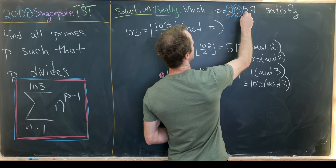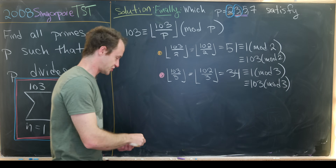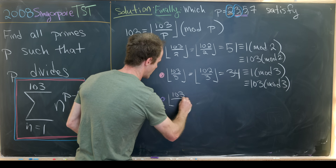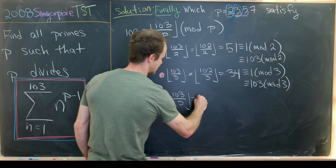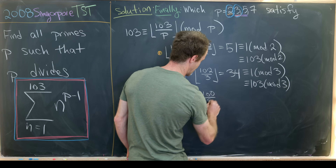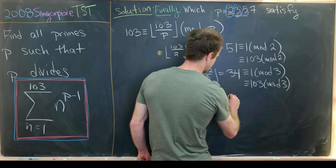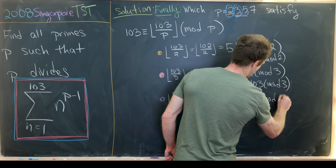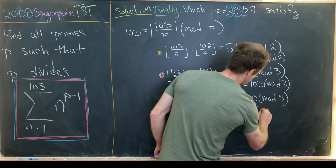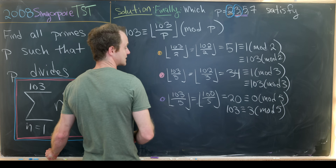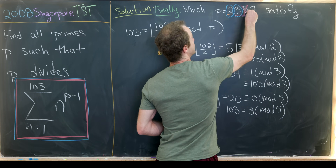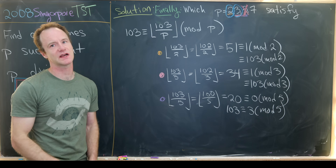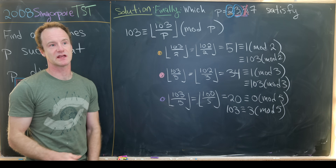For p = 5: floor(103/5) = floor(20.6) = 20, and 20 ≡ 0 mod 5. But 103 ≡ 3 mod 5. Since 0 ≠ 3, p = 5 is not a solution. I'll leave the case p = 7 as a homework exercise — post in the comments whether p = 7 works or not.